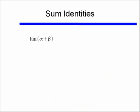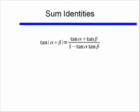Last one — tangent. The tangent of alpha plus beta is a bit more complex. It equals tangent of alpha plus tangent of beta, all over 1 minus tangent alpha times tangent beta. This one has a fraction where the two terms in the numerator are added, and the terms in the denominator are subtracted.